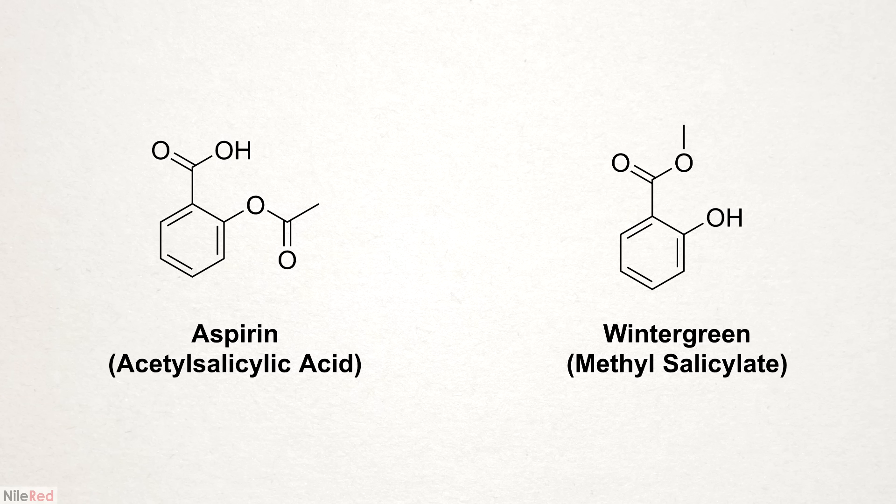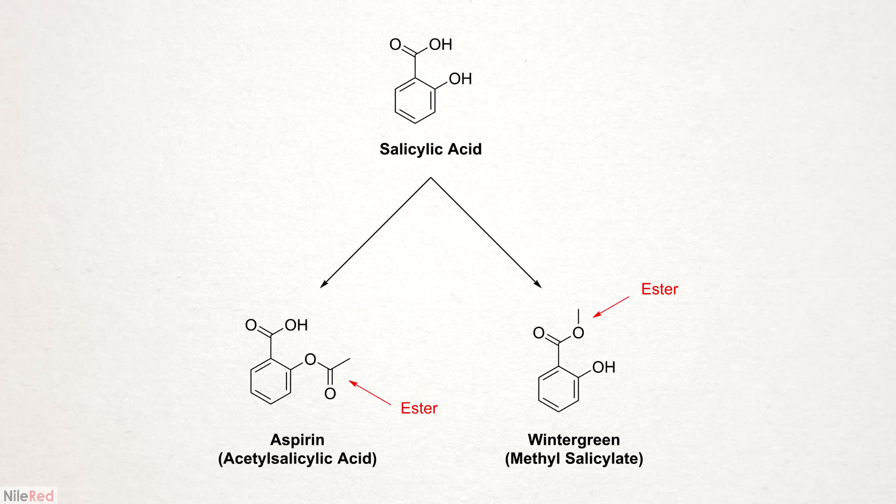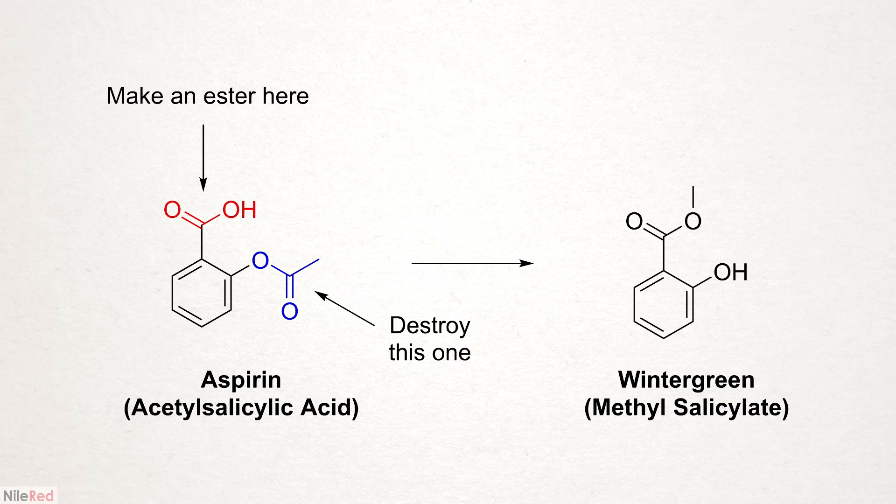To make the wintergreen, the easiest thing to start with is aspirin because its structure is really similar. They're both derived from the salicylic acid molecule, and they've just been esterified in different places. To make the conversion, I need to make an ester out of the carboxylic acid group marked in red, and I need to destroy the other one.